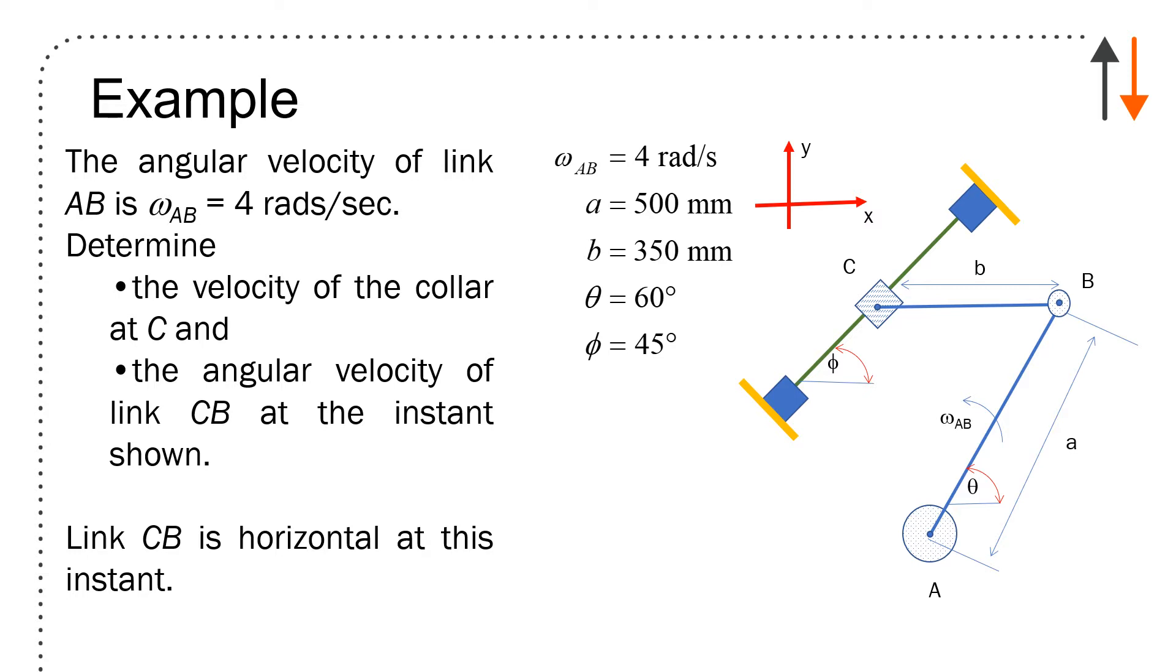At the instance shown, CB is horizontal, and you're given a couple other things. A equals 500 millimeters, B equals 350 millimeters, theta is 60 degrees, and phi is 45 degrees.